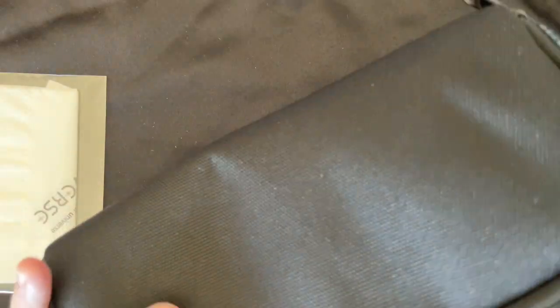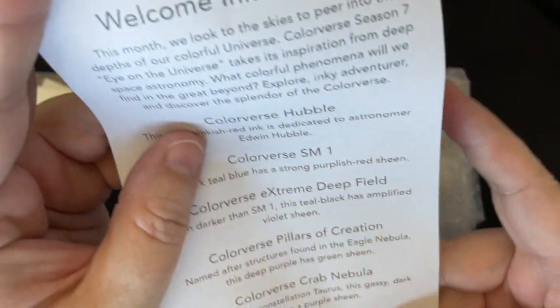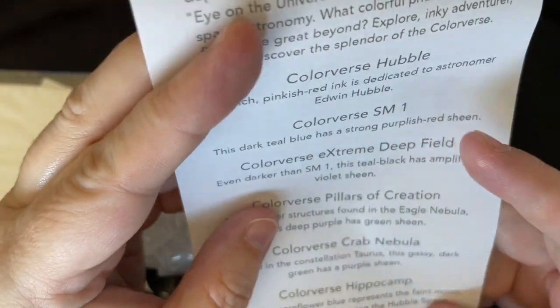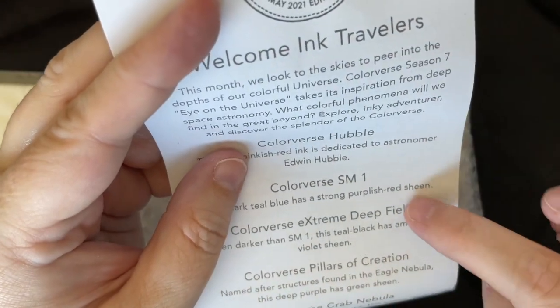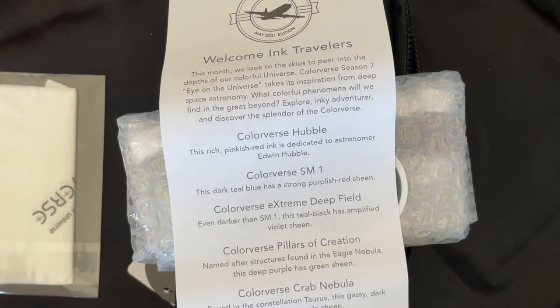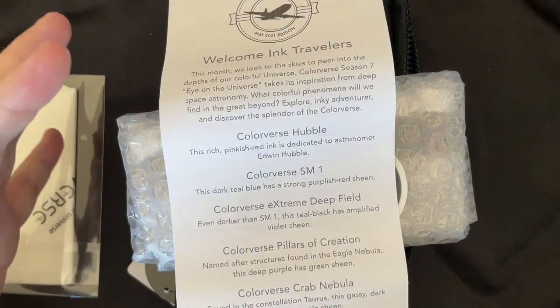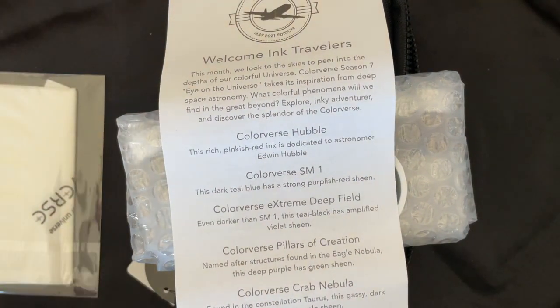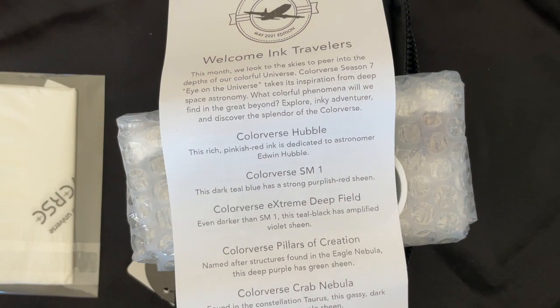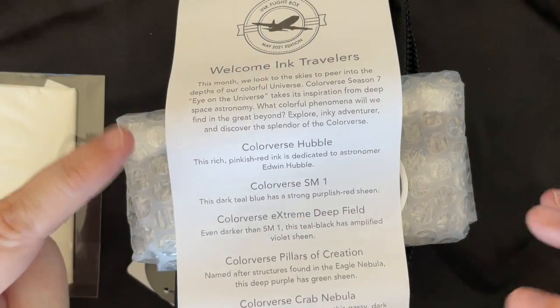We also have a two-way pouch. This is a snazzy little pouch, though. Check this out. Okay, here we go. It is Welcoming Travelers Colorverse Season 7. So we have a bunch. Okay, this is going to be cool. So we have one, two, three, four, five, six.